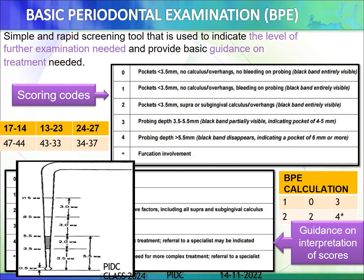If there are pockets less than 3.5 mm, no calculus or overhangs, but bleeding on probing is present, the scoring code for that sextant is 1. If pockets are less than 3.5 mm with supra- and subgingival calculus and overhangs present, the scoring criteria is 2. If the probing depth is 3.5 to 5.5 mm, the black band of the probe is partially visible, indicating a pocket of 4–5 mm — scoring code 3. If the probing depth is more than 5.5 mm, the black band disappears, indicating a pocket of 6 mm or more — scoring code 4.